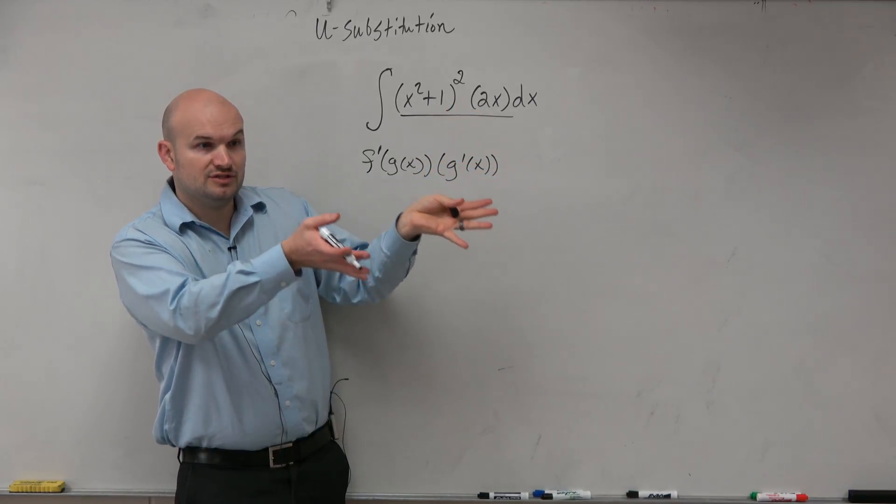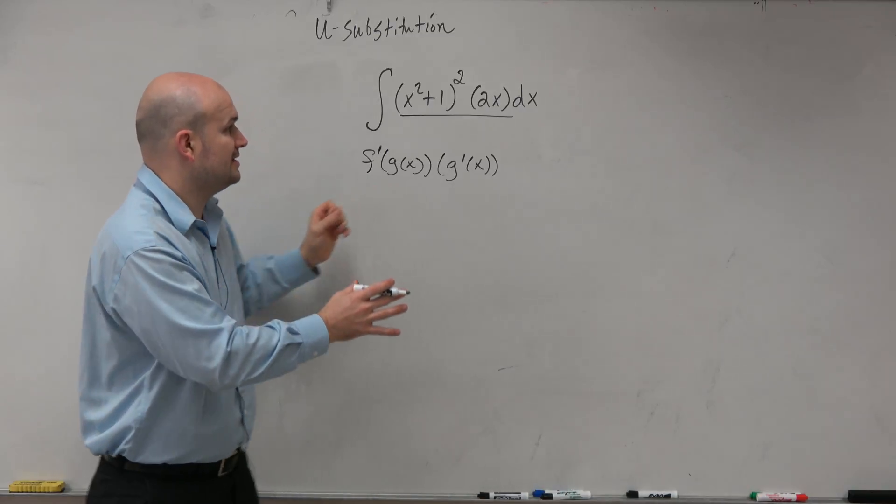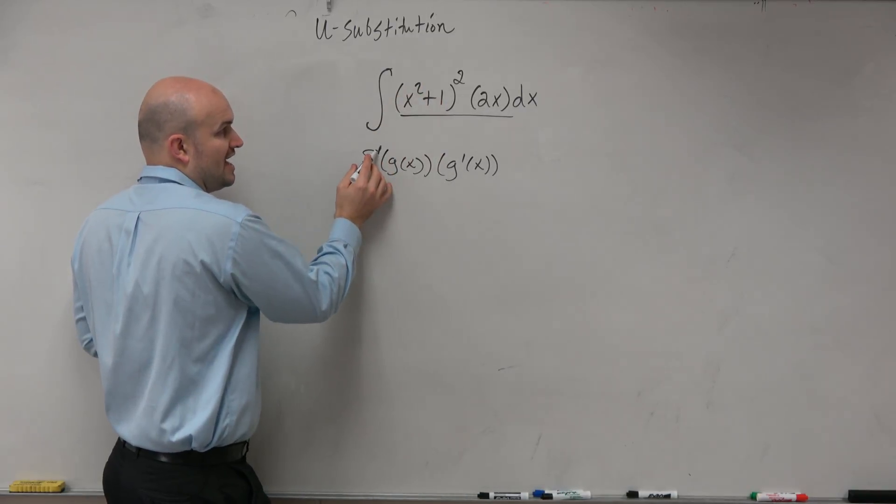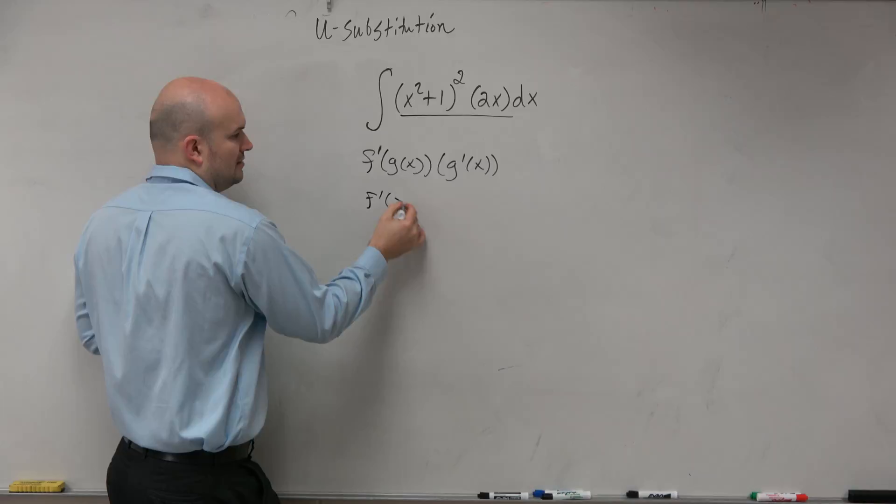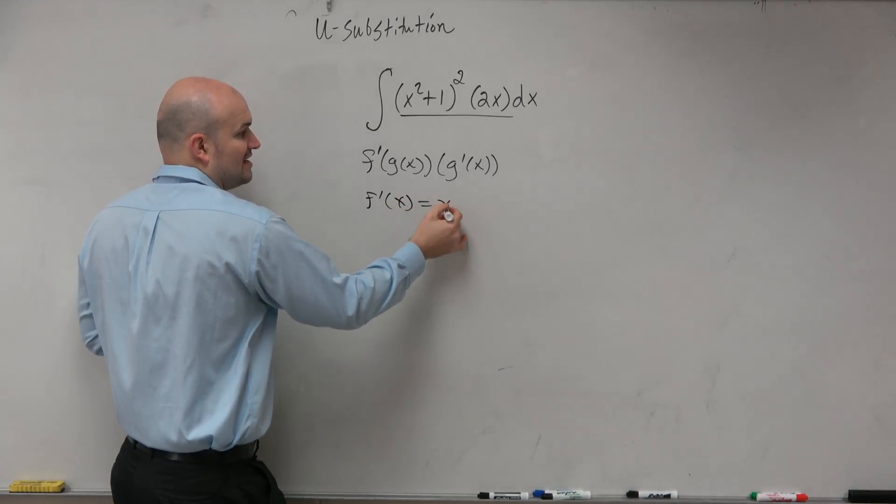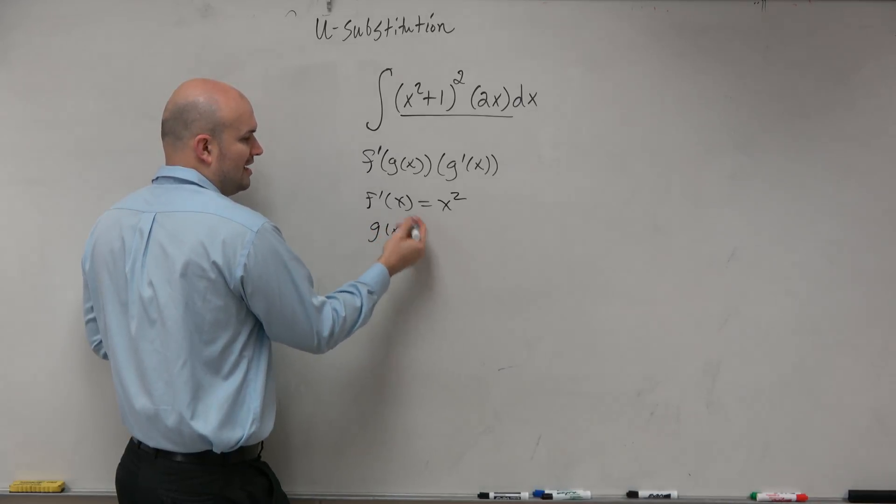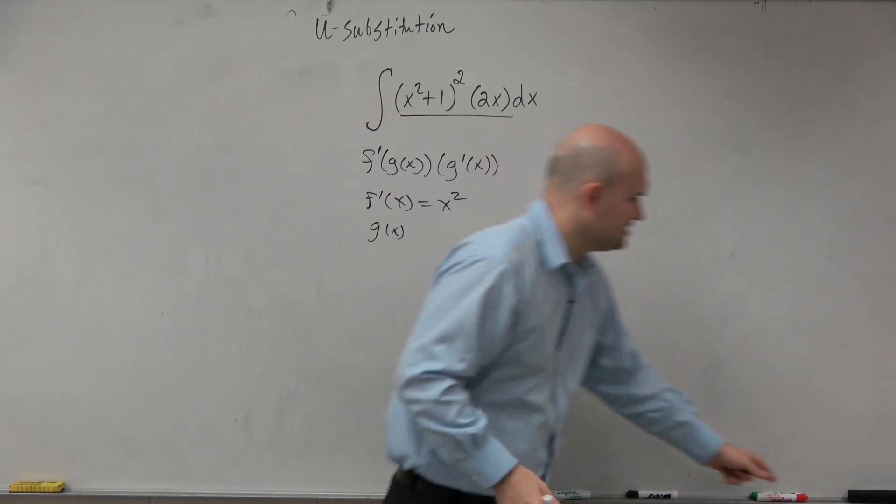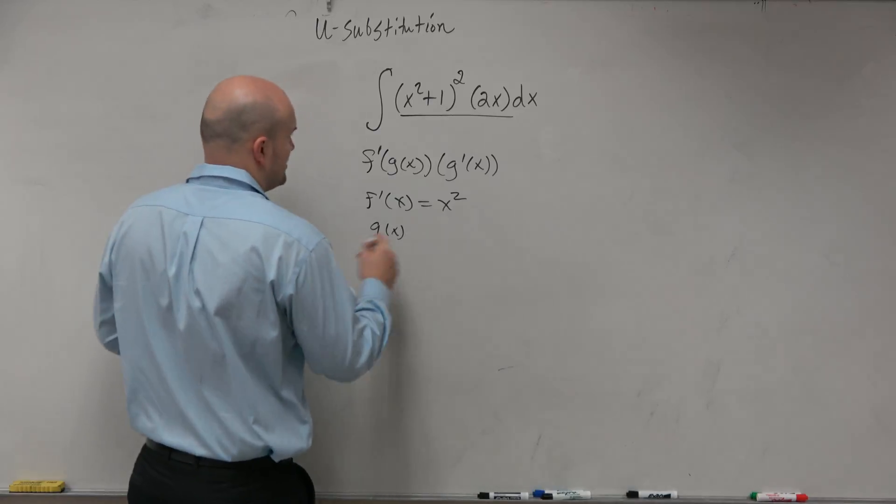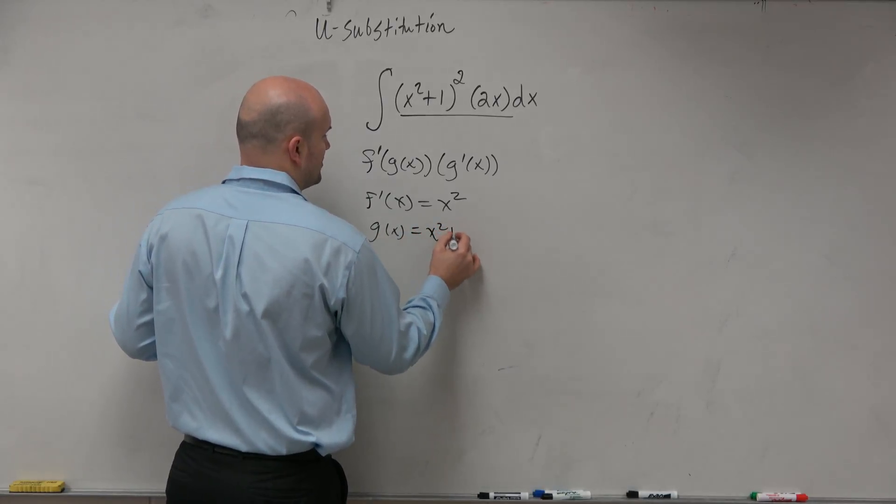So now let's just take the antiderivative. If we're saying the outside function, the f prime of x, is x squared, right? And we know that g prime of x, we don't really need to figure that out. We already have g of x is equal to x squared plus 1.